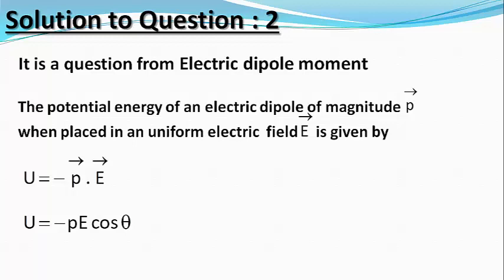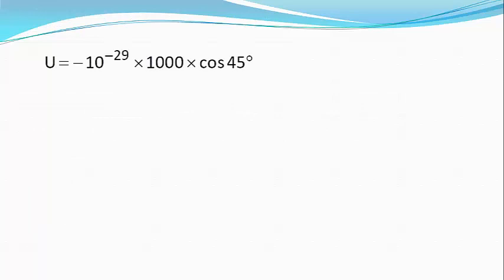In the present case, U equals minus 10 raised to power minus 29 multiplied by 1000 multiplied by cos of 45 degrees,